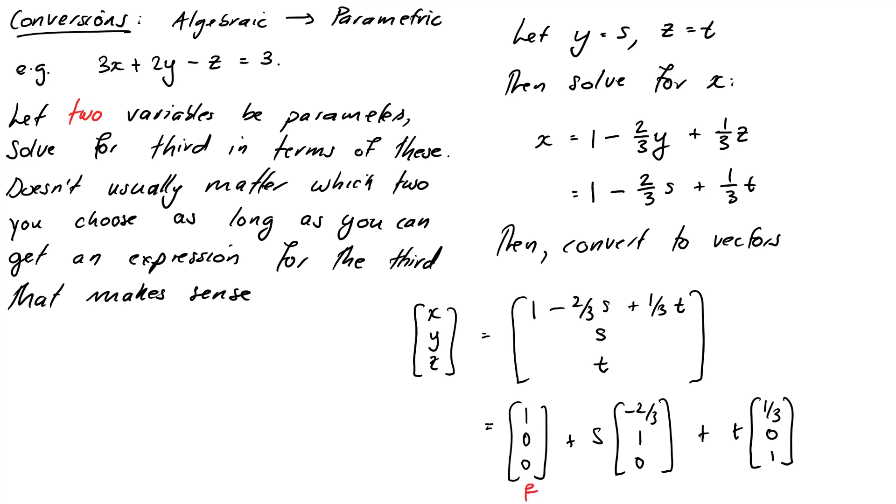Okay, so that's P is (1, 0, 0). And the direction vectors U and V are (-2/3, 1, 0) and (1/3, 0, 1). Now it's worth doing one more example because sometimes it's not so obvious what to do.